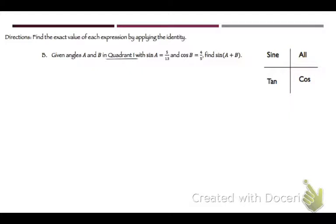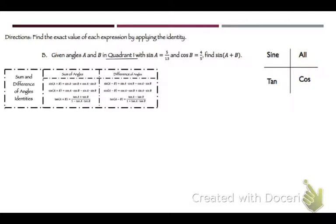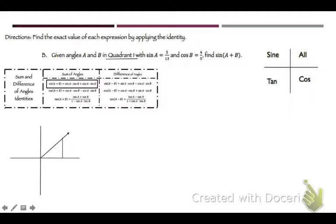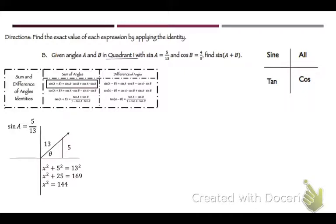Let's do this one — it's in quadrant 1 and we're asked to find sine of A plus B. The formula uses sine A, cosine B, cosine A, and sine B — but we don't have cosine A or sine B, so we draw triangles. Sine A is 5/13, meaning opposite is 5 and hypotenuse is 13. Using the Pythagorean theorem: x² + 25 = 169, so x = 12. Therefore cosine A is 12/13.